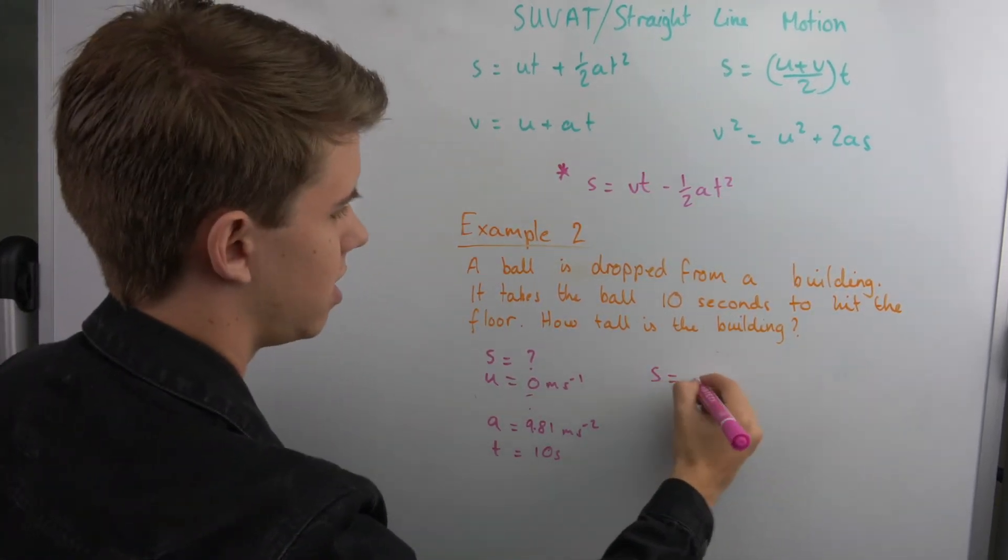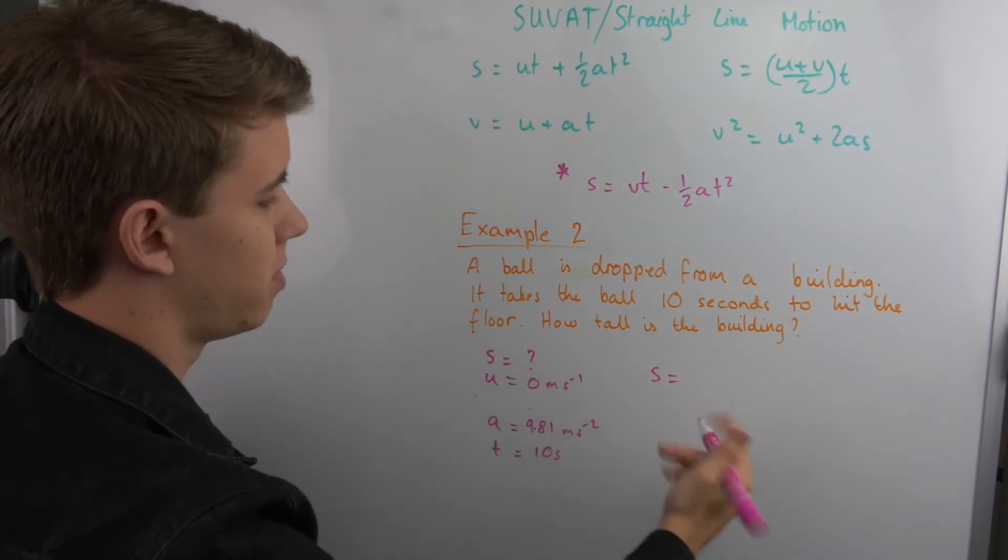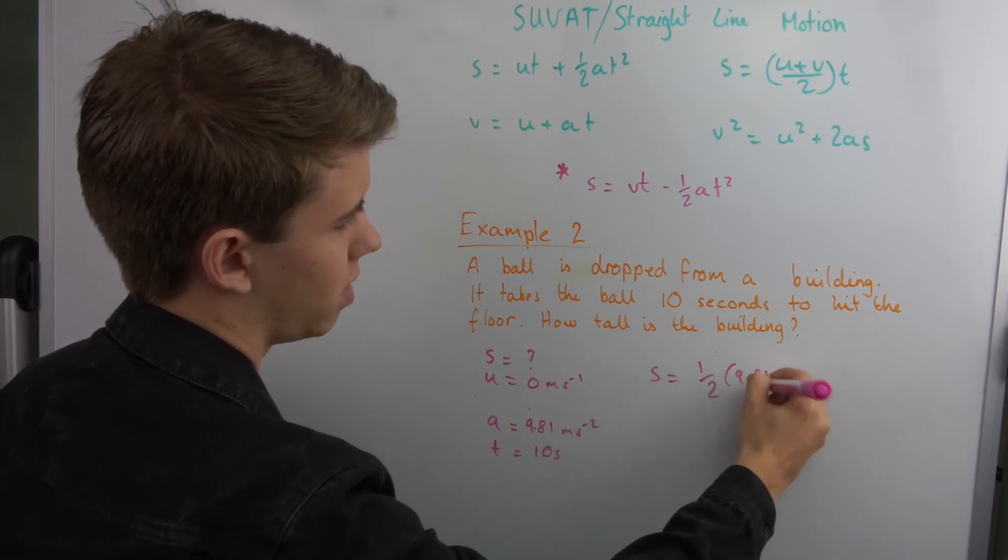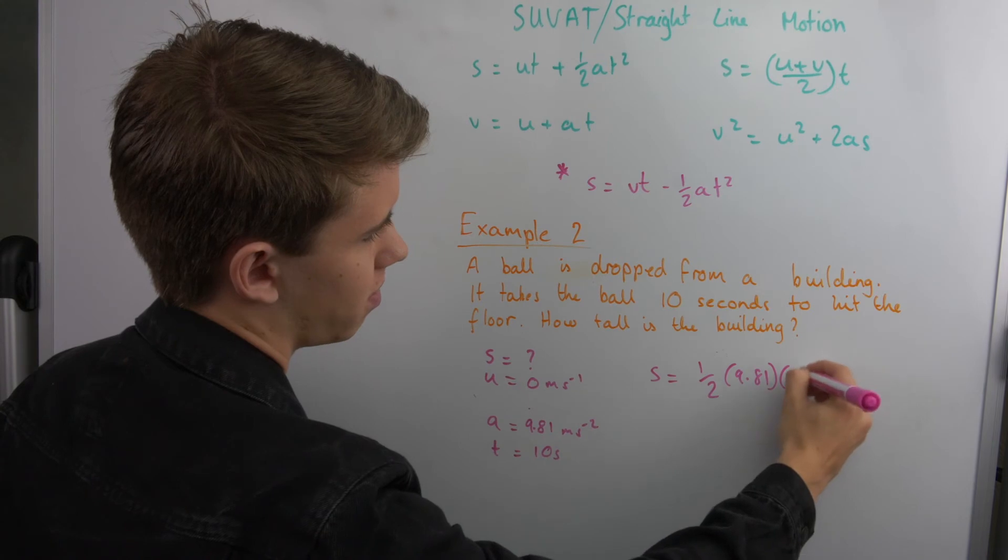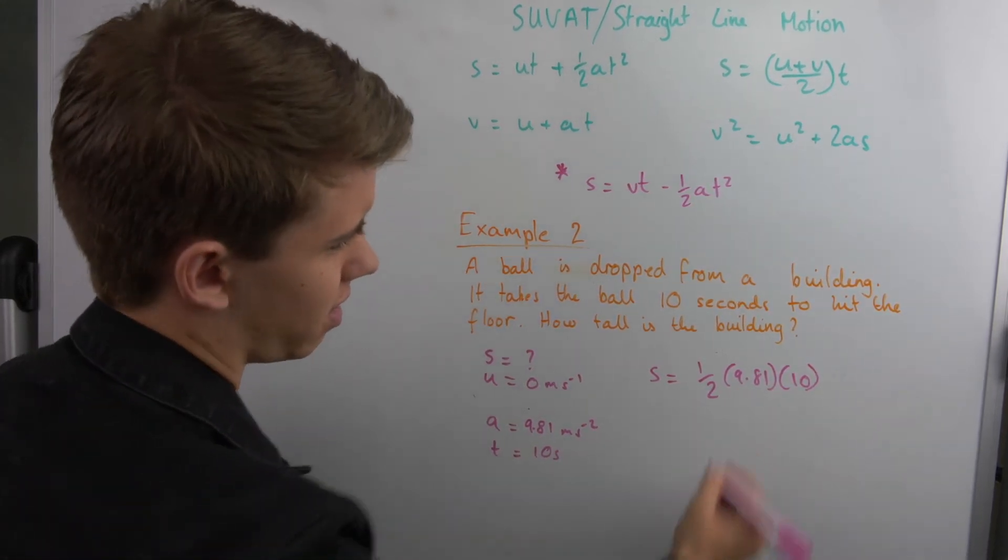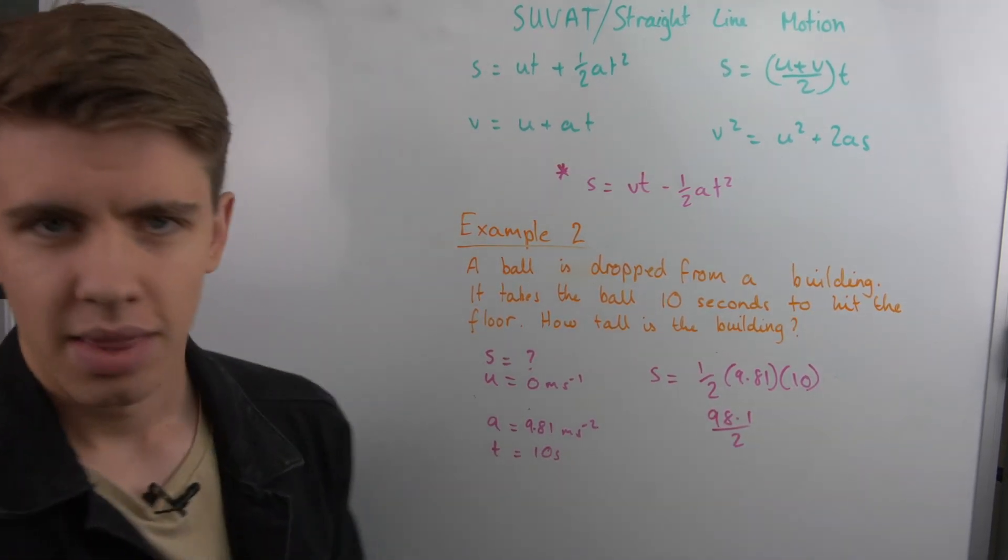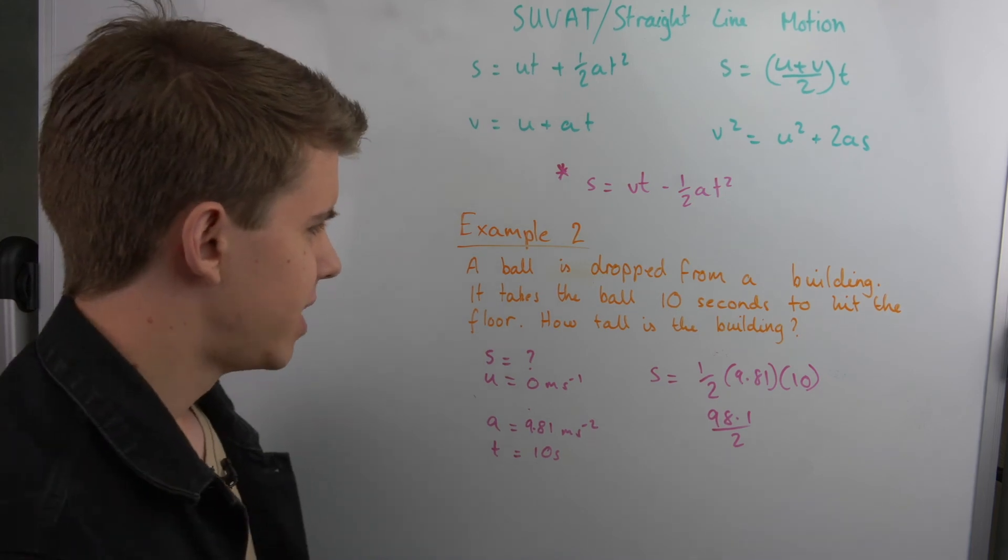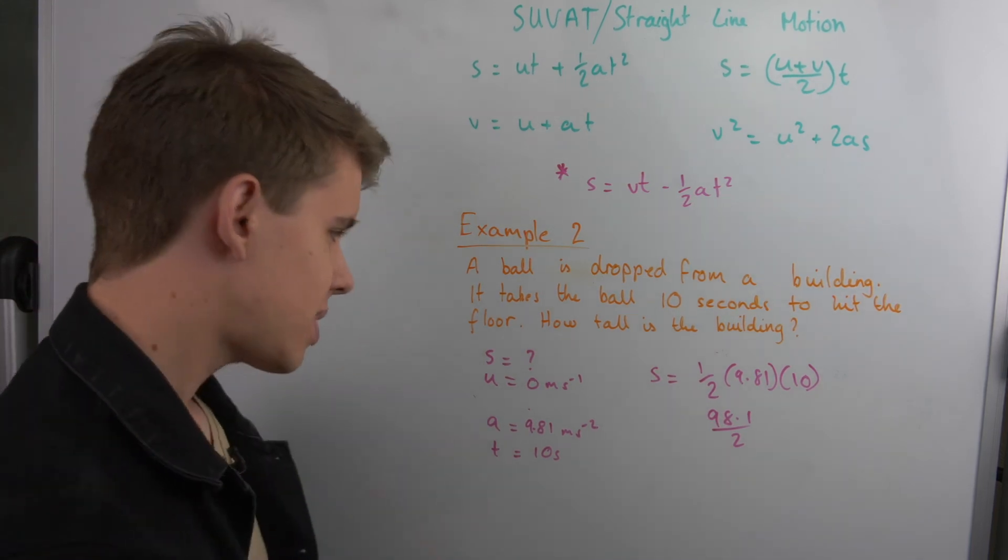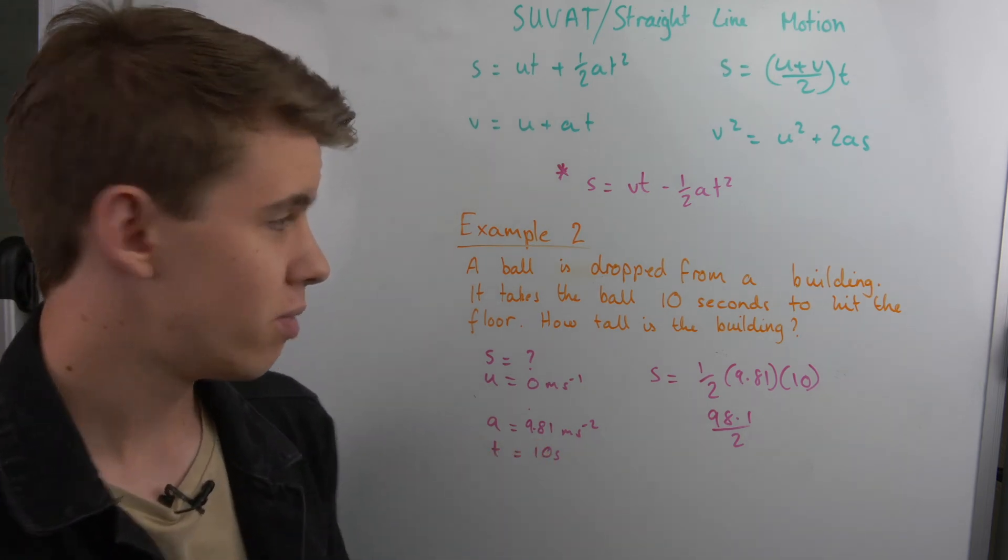We can say that S is equal to zero times T, so that becomes zero, is then plus a half times 9.81 times 10. And this would then give you an answer of 98.1 divided by 2, and then that would be 49.05. And that would then be your height of this building, and then you have your answer.